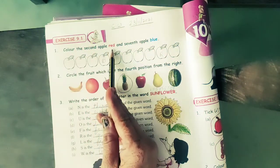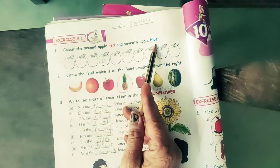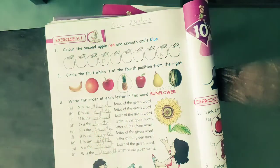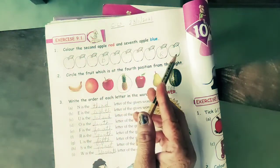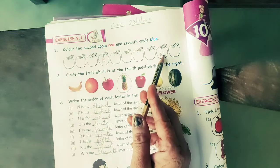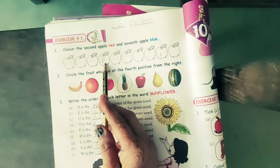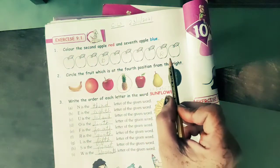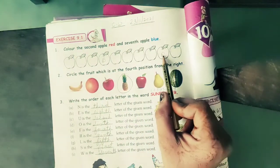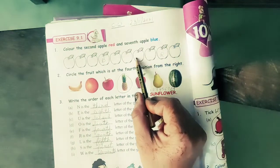Color the second apple red and seventh apple blue. Okay my dear students, you have to count like this: first, second, third, fourth,